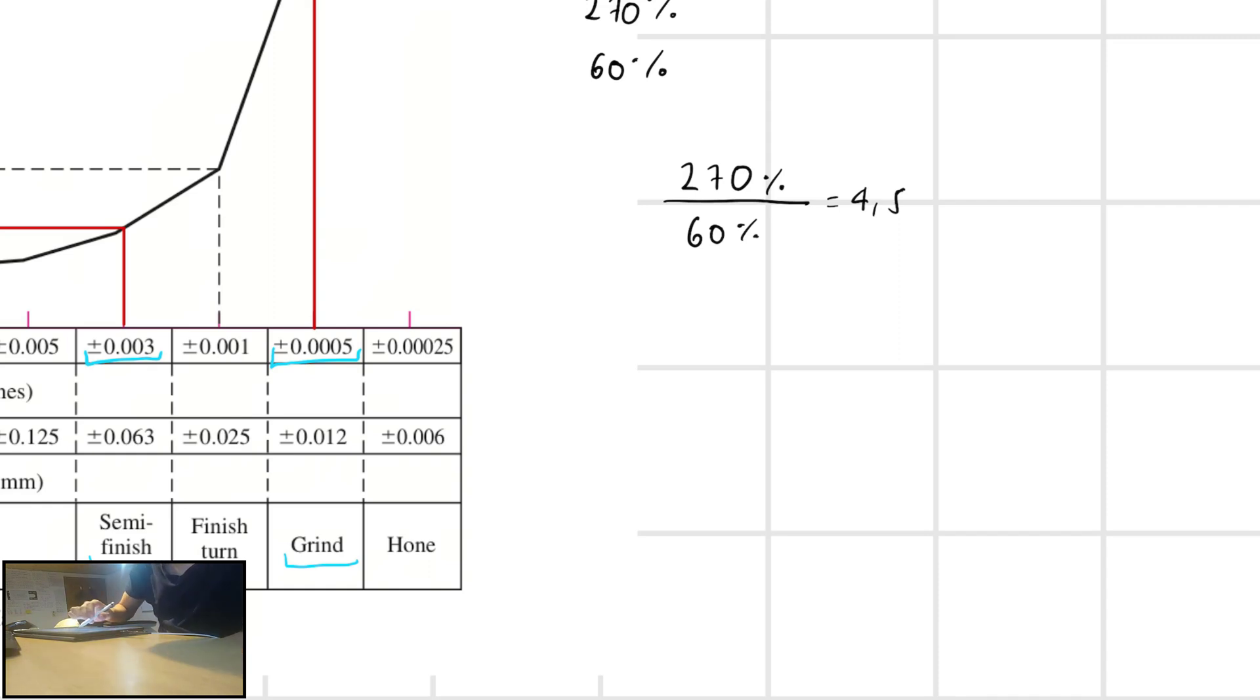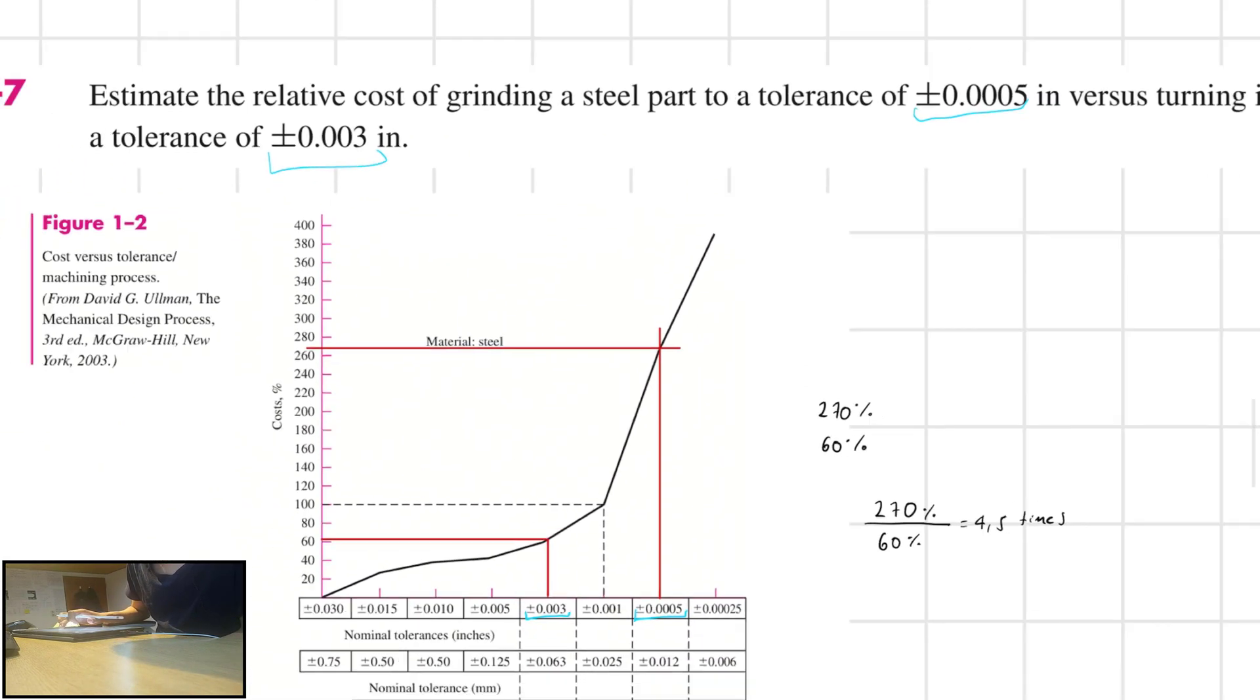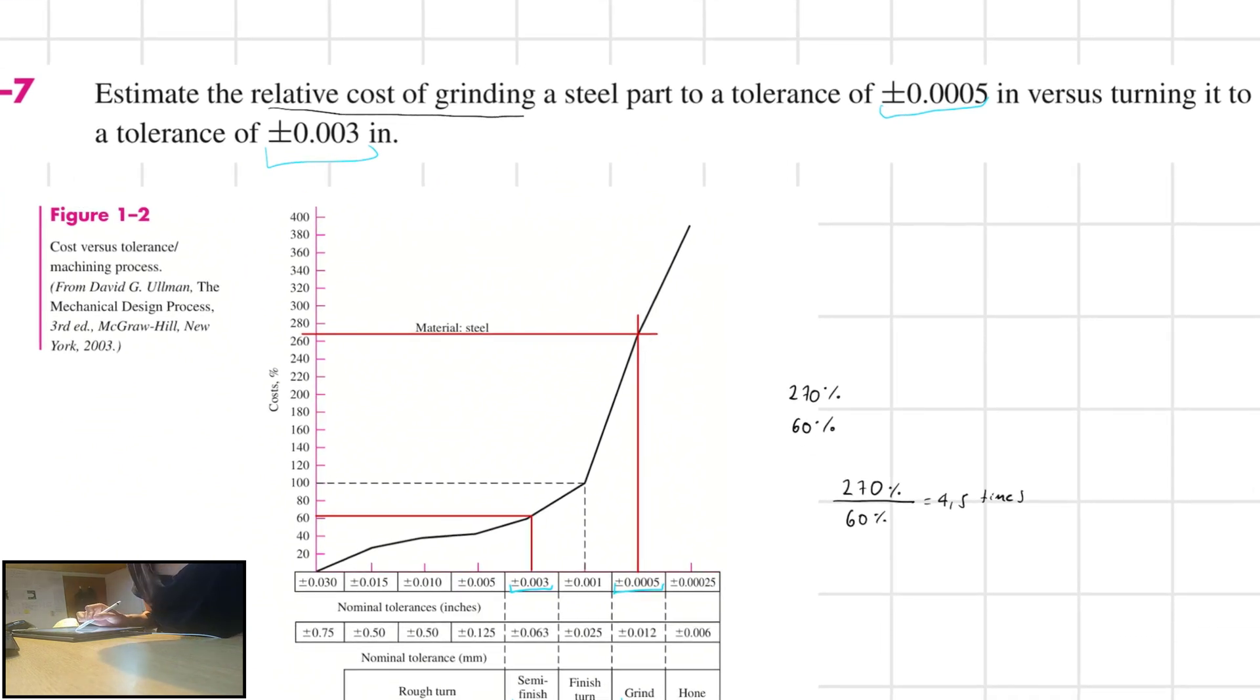So that is the answer, 4.5 times. Right? That is the relative cost of grinding a steel part to a tolerance of this versus this. That is it, guys. This was pretty easy to explain and solve.